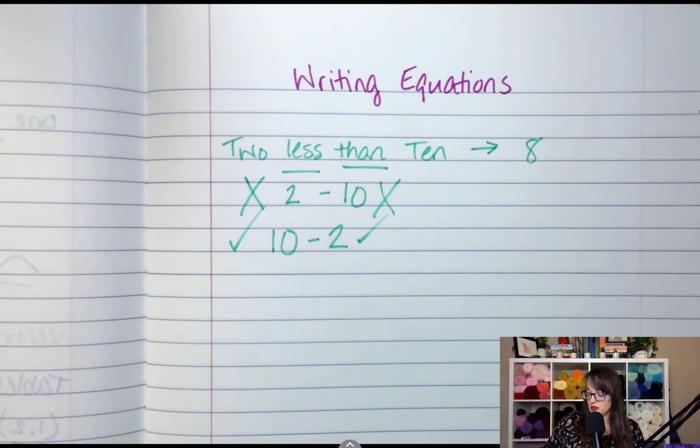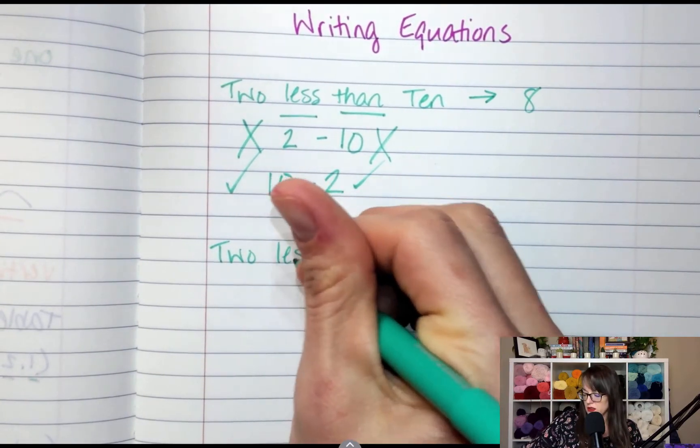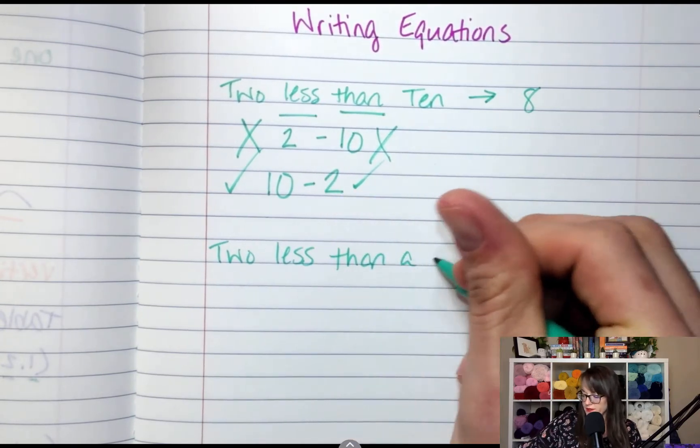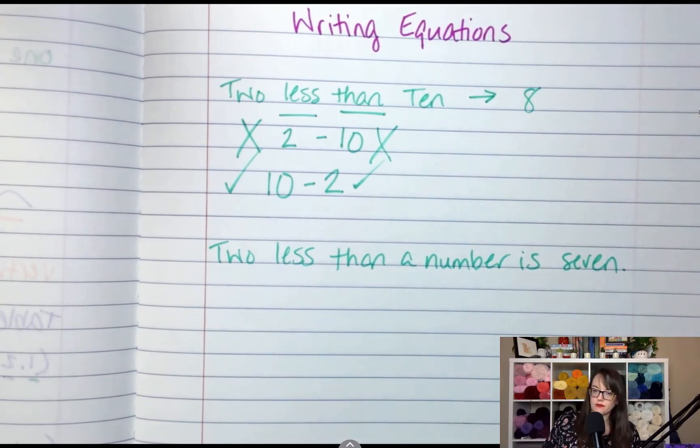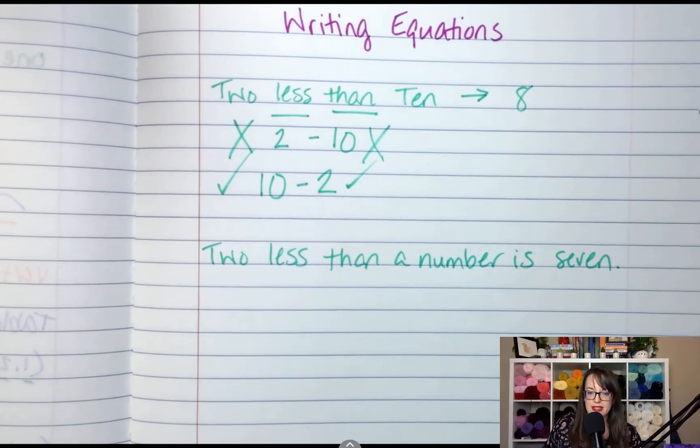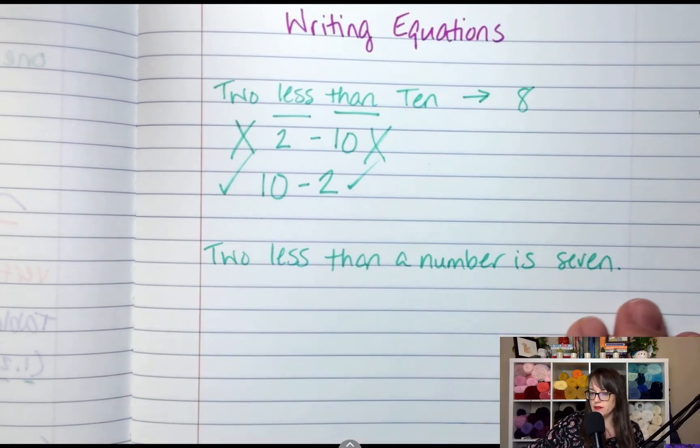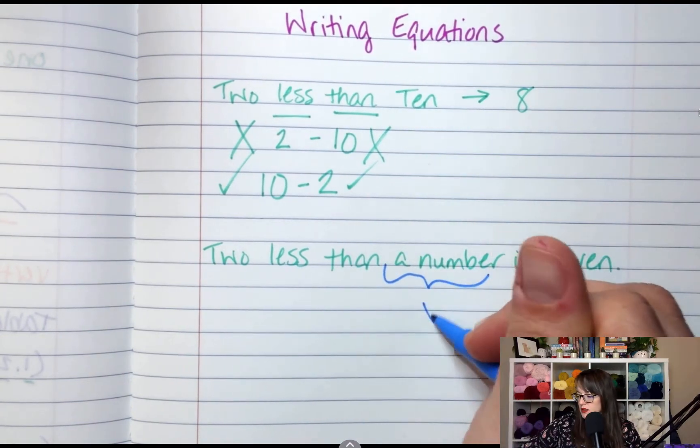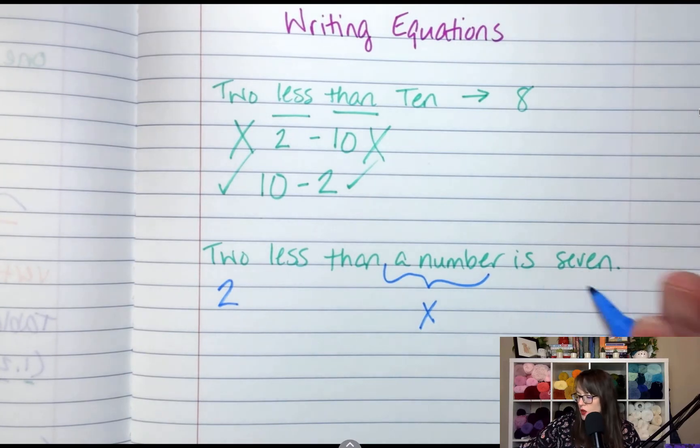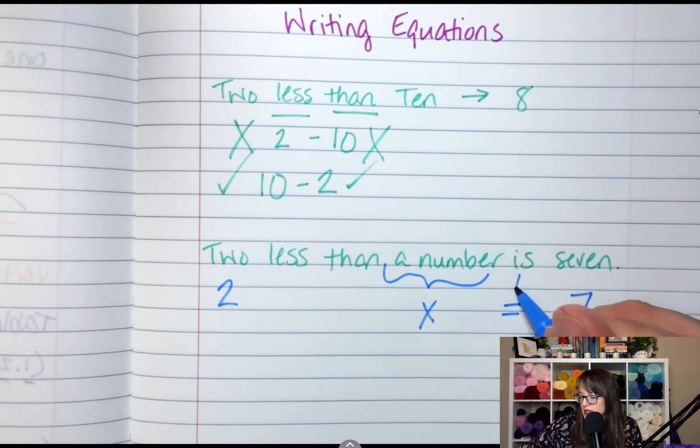So if I told you 2 less than a number is 7. What we're doing today is we're identifying that missing piece. What are we trying to figure out? We're trying to figure out what this a number is. This is my X, a number. And we know 2, and we know 7. What does the word is mean? Equals. So is means equals.